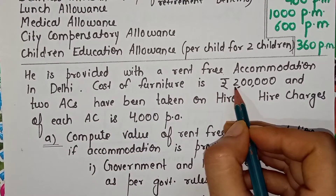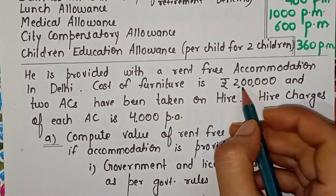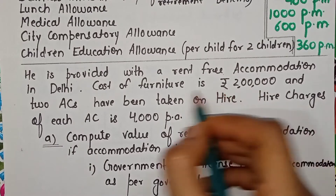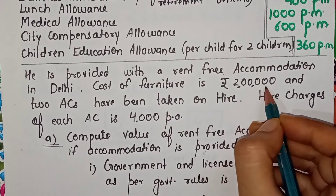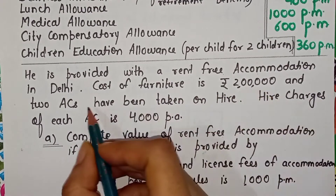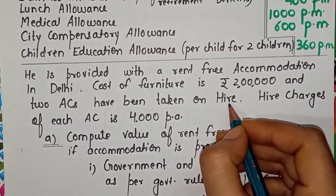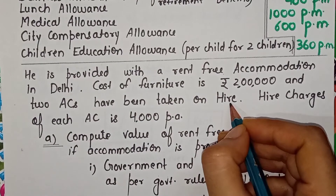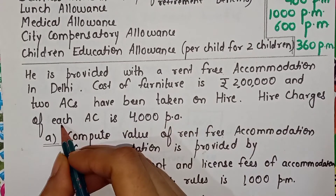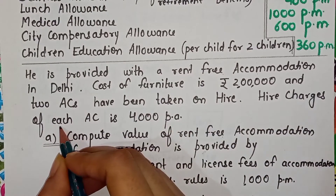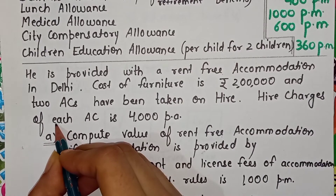The cost of furniture is 2 lakhs — furniture is the employer's own. Two ACs have been taken on hire. The cost of higher charges is also given in the question.